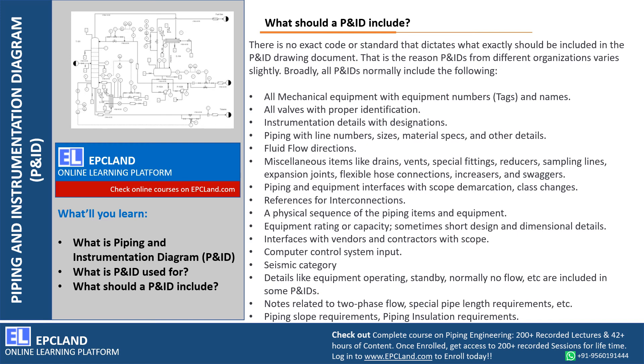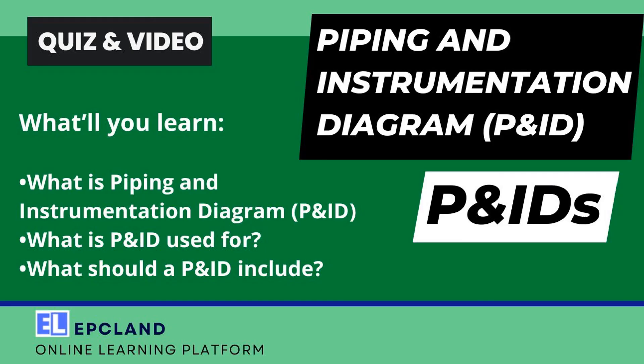General notes applicable to many P&IDs can be part of the legend P&IDs, which provide common information for all P&IDs. Along with that, slope requirements and installation requirements are also included. So in this section we talked about what is P&ID, what is P&ID used for, and what should a P&ID include. There is a link for a quiz related to this topic, along with links to useful videos and courses published on EPC Land — all included in the description box.